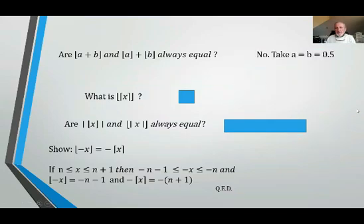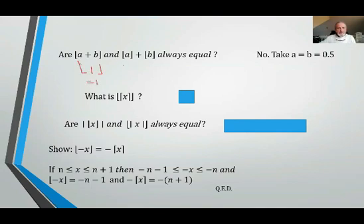A very simple counterexample: take a equals 0.5 and b equals 0.5. Adding them gives 1, and the floor of 1 is 1. But the floor of 0.5 is 0 and the floor of 0.5 is 0, and 0 plus 0 equals 0, which is not equal to 1. So the floor of a plus b does not always equal the floor of a plus the floor of b.